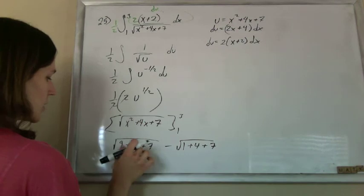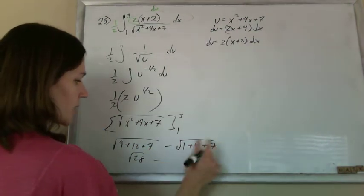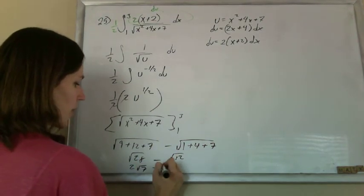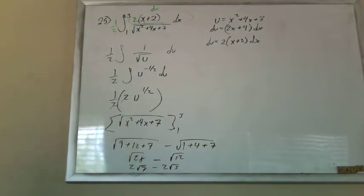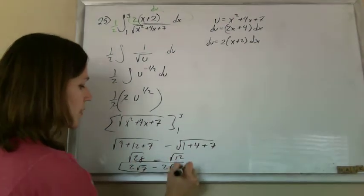That's 19, 28. The square root of 28 minus the square root of 12. So that's 2 root 7 minus 2 root 3. Let's see if they agree. 2 root 3. Yep, they do. Awesome. So 2 root 7 minus 2 root 3.